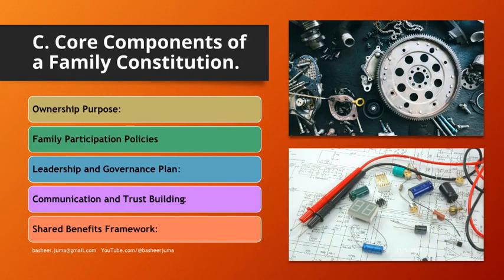Core components of a family constitution. Ownership purpose outlines the shared vision and goals as enterprise owners. Family participation policies define how family members engage with the business. Leadership and governance plan establishes protocols for leadership roles and succession. Communication and trust building encourages transparency and trust through structured dialogue. Shared benefits framework creates equitable policies for benefits and distributions.